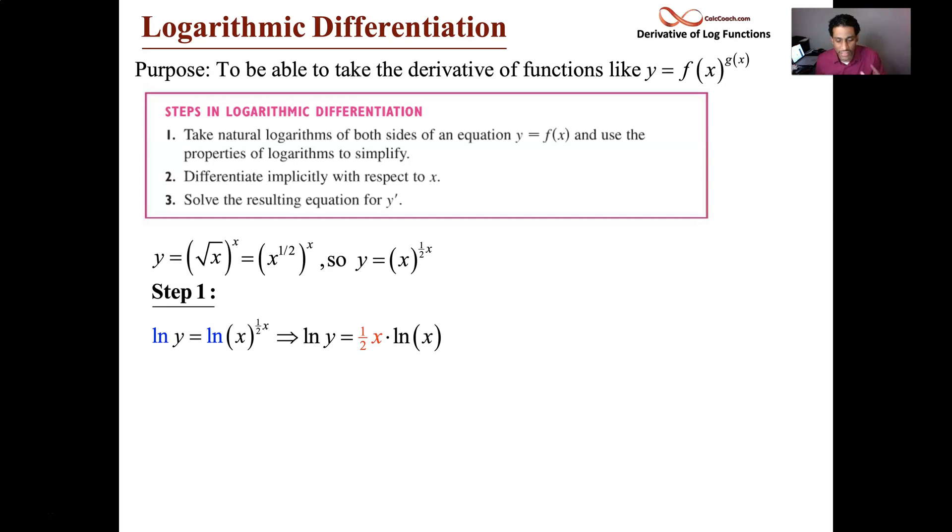Even though this function could be written explicitly, we're going to treat it as if it's not, and we're going to be able to take the derivative of the left, get 1 over y, y prime. And when it comes to taking the derivative of the right, we have a product rule.